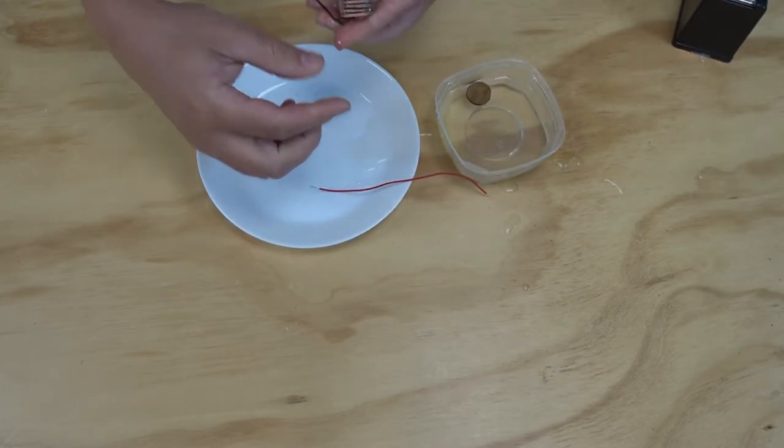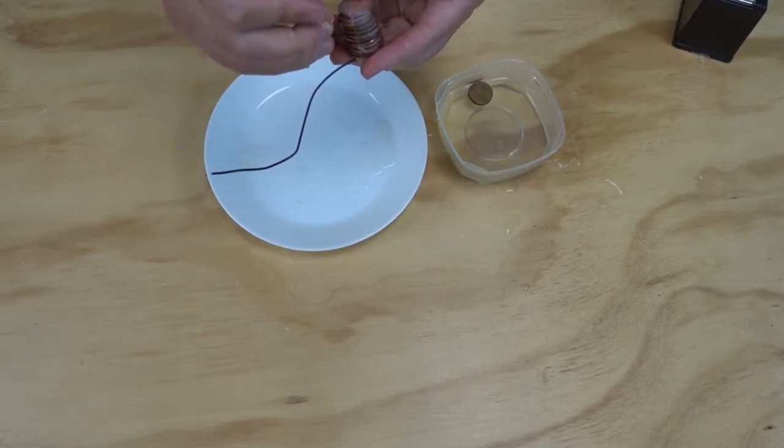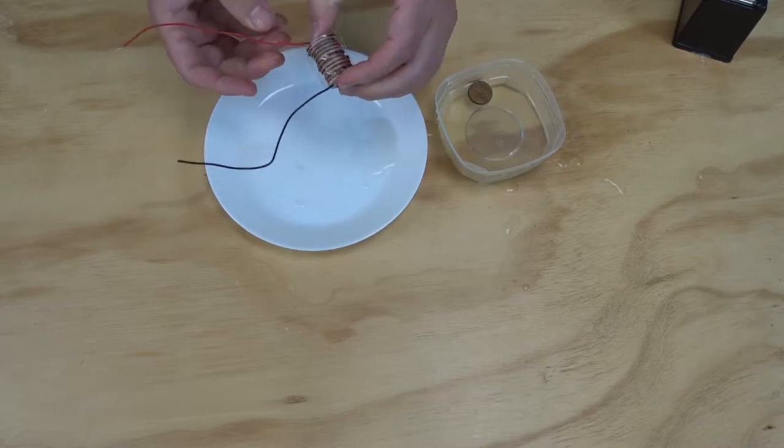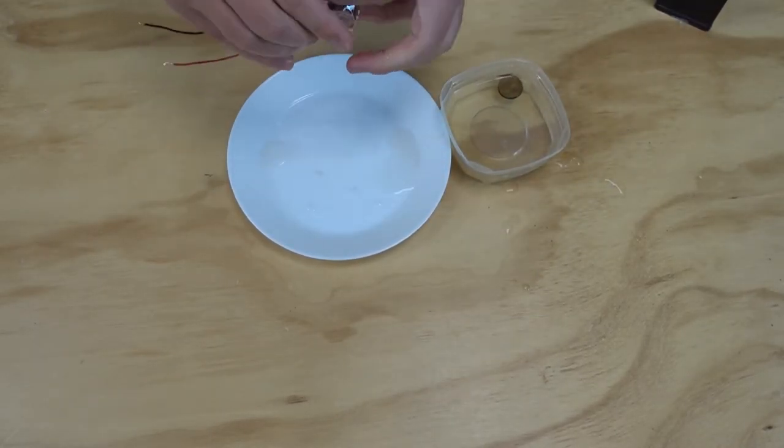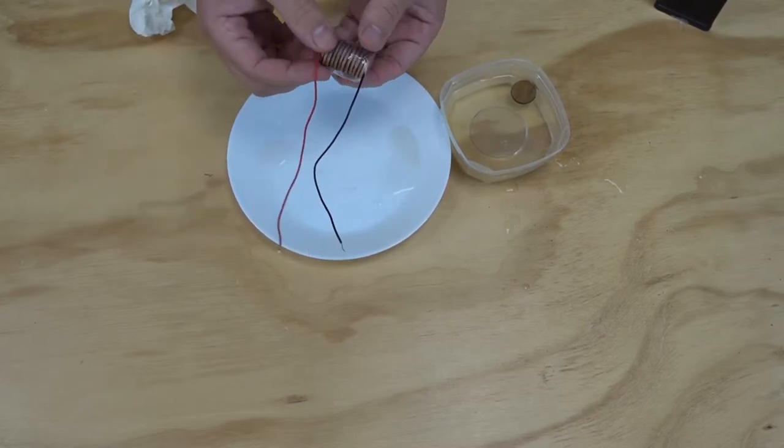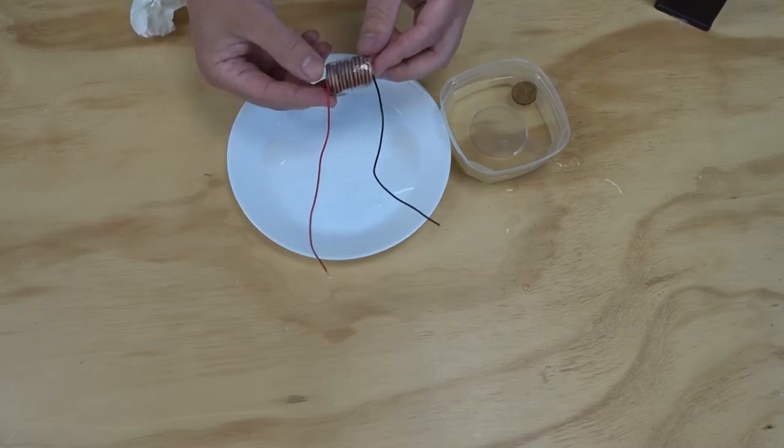As you can see, my red wire just popped out. I'm just going to slot that back in, making sure that it's touching that bottom coin. Once we've got that all wrapped up, we've got our battery ready to go. Now I'm going to clean up this mess, then we'll do some testing.